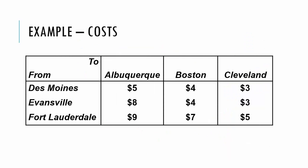The last thing we need is the per unit shipping cost from each source to each destination. Here we see the per unit shipping cost to move an item from each particular production facility to each warehouse. For example, it costs $4 to ship one unit from Evansville to Boston. Often, these costs are positively correlated with the distance that must be traveled.